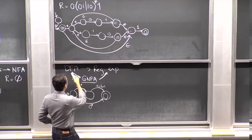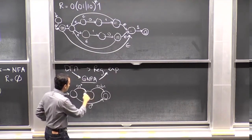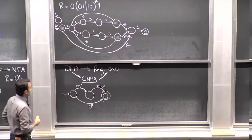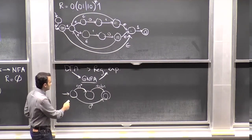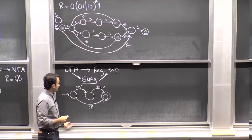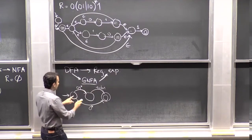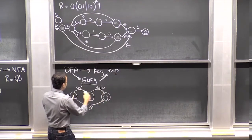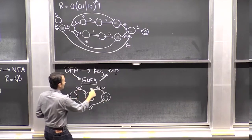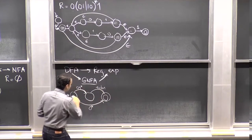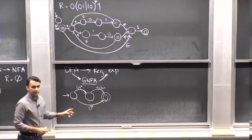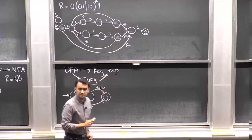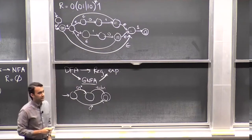We're going to show that you can reduce this GNFA object to a regular expression, completing our proof. Does this generalized non-deterministic finite state automata make sense? The arrows just have regular expressions, and you can get from state to state either by going through certain arcs (where your string would look like some concatenation of regular expressions) or by other paths.